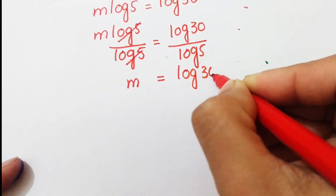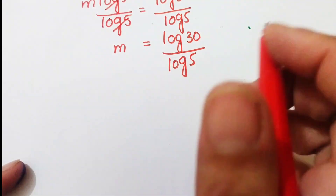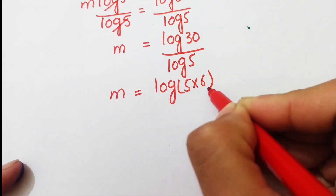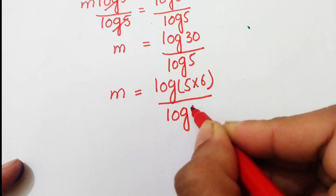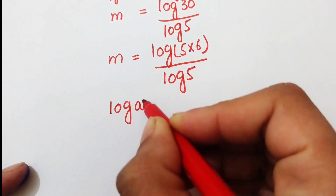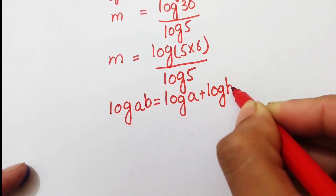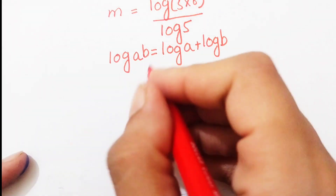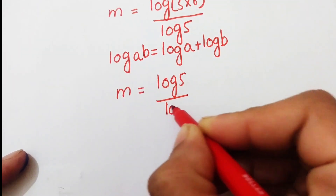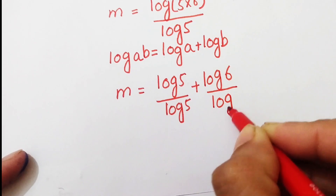Now log30 can be written as log(5×6). We know the property of log: log(a·b) equals log(a) plus log(b). So m becomes m equals log5 over log5 plus log6 over log5.